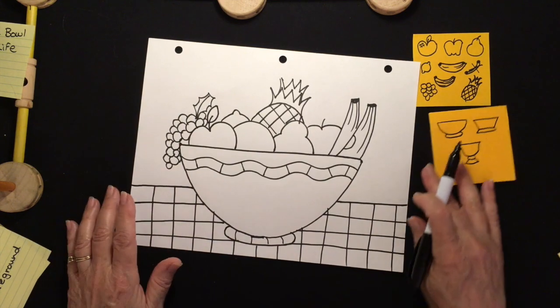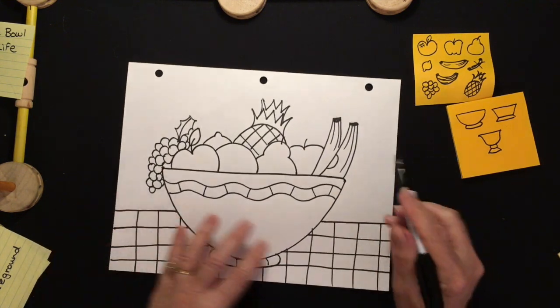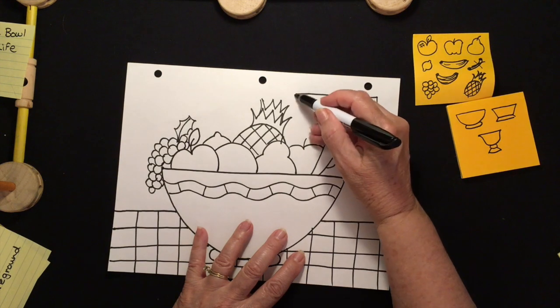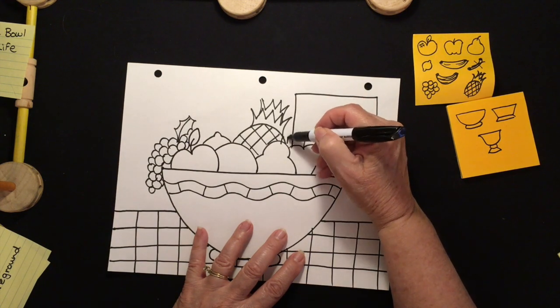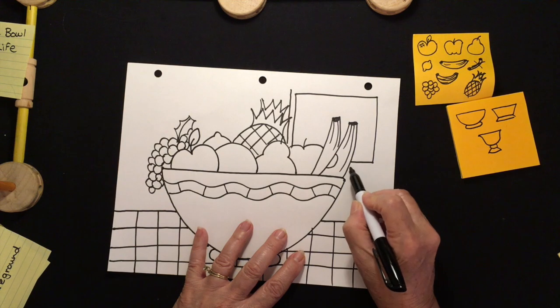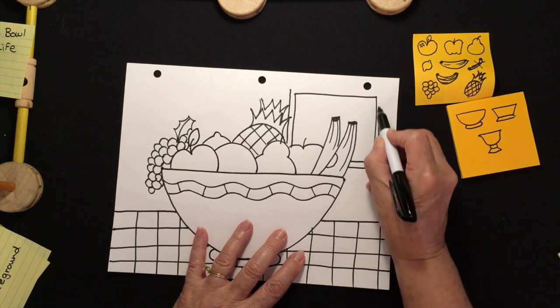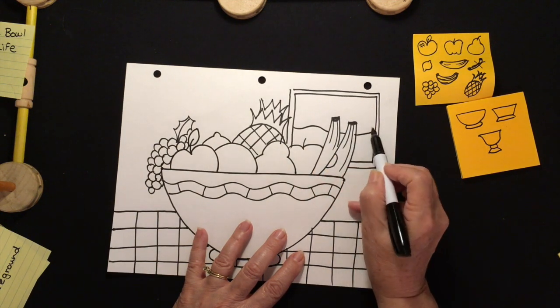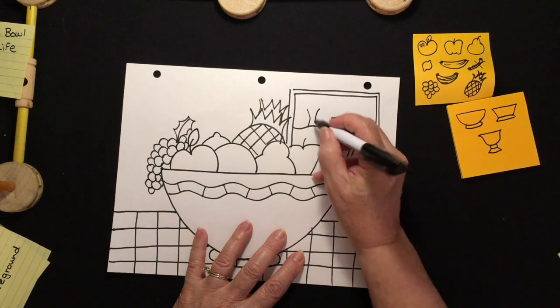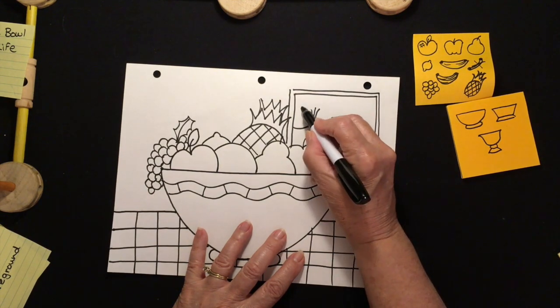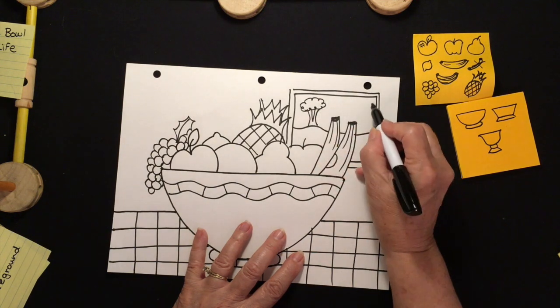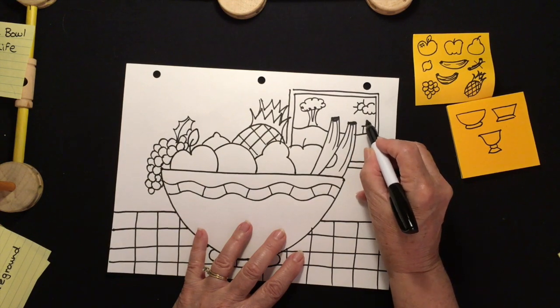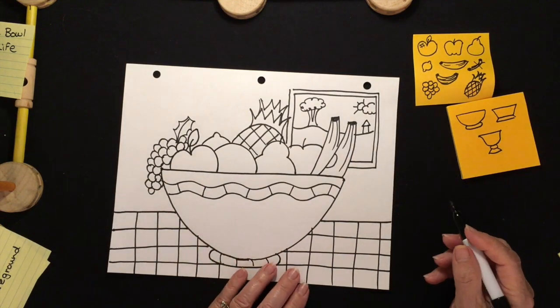Now, I could be finished or I might add a window behind the fruit bowl. Watch this. The window up on the wall. This is adding even more depth to our picture because this is going to make it include a background. Because outside of the window, there might be a landscape with a tree. Two curved lines, the letter V, the top of the tree. A cloud, a sun, a house up on the hill. Whatever you decide. You are the artist.